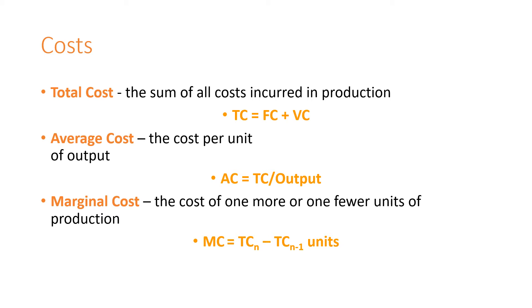These relationships will be important later on to understand the cost curves. Total cost is the sum of all costs incurred in production, consisting of fixed costs plus variable costs. Average cost is the cost per unit of output, calculated as total cost divided by quantity. Marginal cost is the cost of one more or fewer units of production, calculated as total cost minus the total cost of quantity minus one.